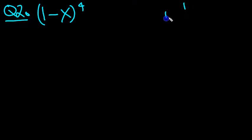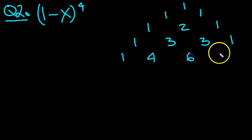It's the power of 4, so we need to draw Pascal's triangle to the fourth row. Here's the third row. That's the zeroth row, this is the first row, this is the second row, the third row, and then the fourth row. There we go.